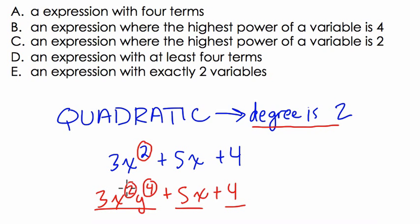If you have multiple powers in a term for variables, you add them. So 2 plus 4 is 6. This would be a sixth degree polynomial.